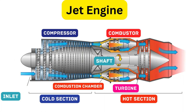Next is the turbine. Those hot, fast-moving gases produced during the combustion phase spin a set of turbine blades connected to the same shaft as the compressor. This means the engine uses some of the energy from the hot air to power itself — basically, the engine is self-sustaining once it's started.